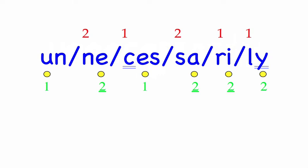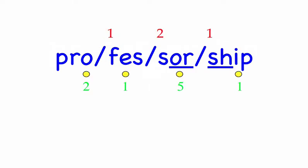Row seven. Professorship. He applied for the posting of professorship. This is a four-syllable word. First syllable: Pro, three sounds, P-R-O. Fess, three sounds, F-E-S. Sor, two sounds, S-Or. Ship, three sounds, Sh-I-P. Pro-fess-sor-ship. Mark the word. Professorship.